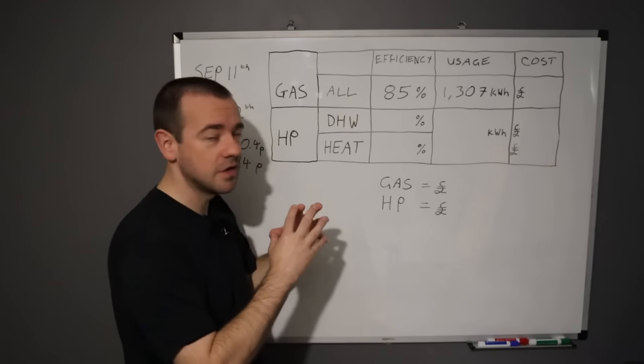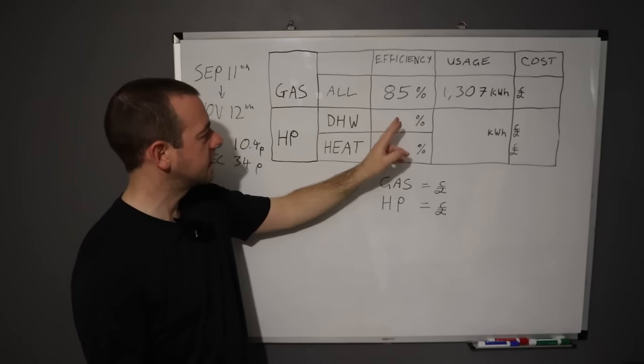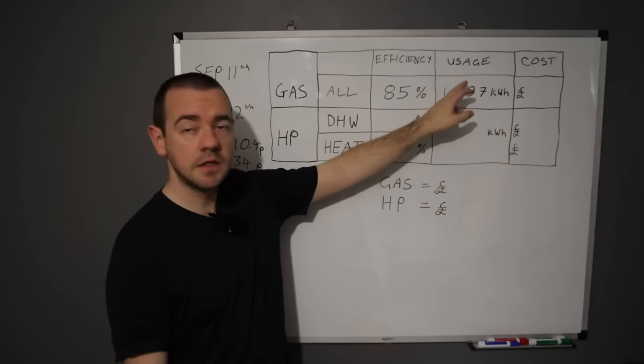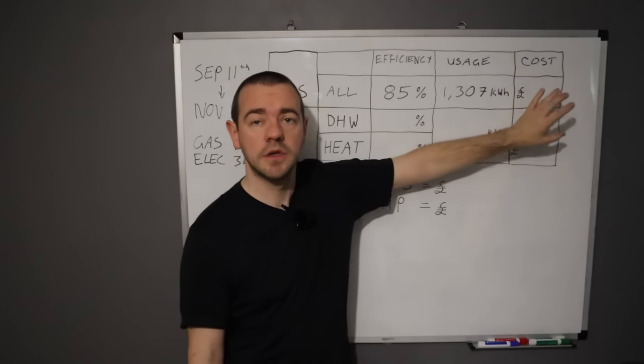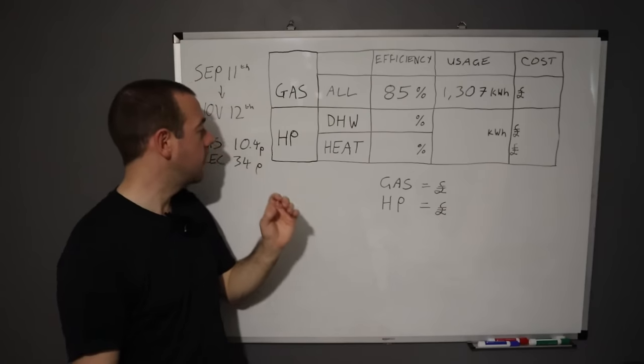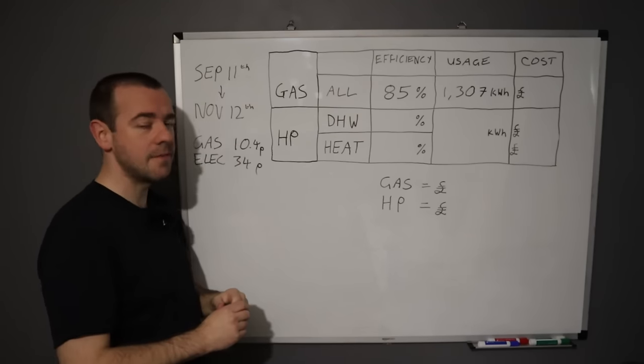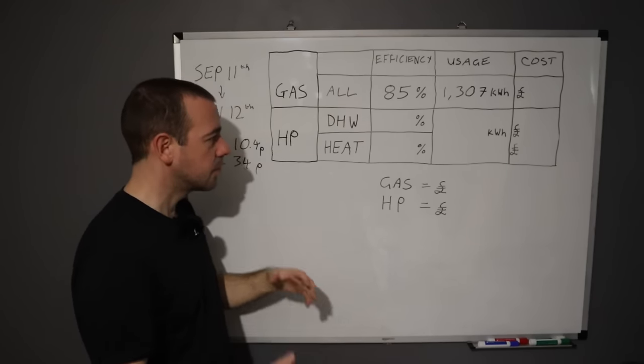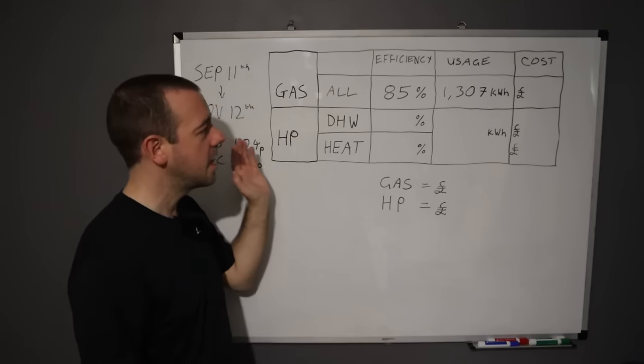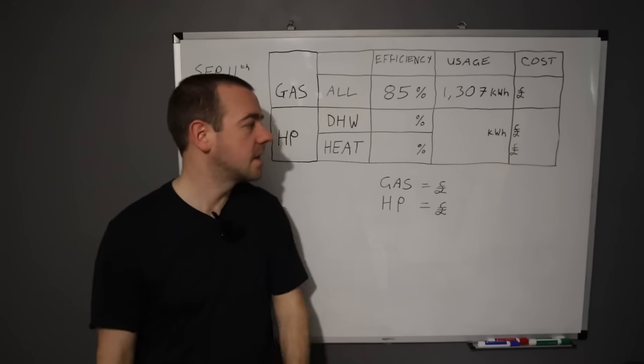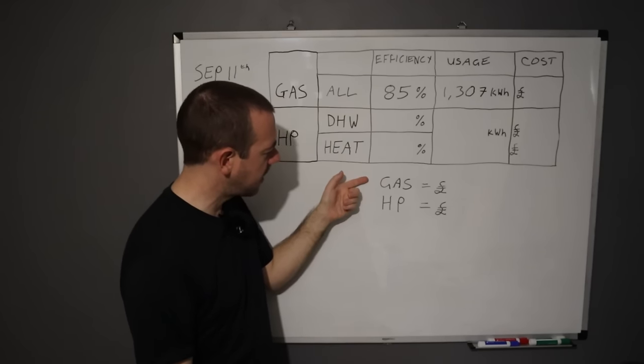Once I've given you these figures of the efficiency, the kilowatt hours in terms of how much they used in electricity or gas, and then the cost of each based on the price cap, today's price cap of 34 pence versus 10.4 pence for gas. I'm not basing this on what I've paid on the time of day tariff with solar panels and home battery system. This is assuming none of that exists and you're just on the standard price cap.